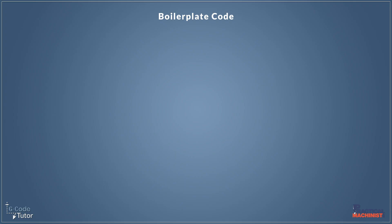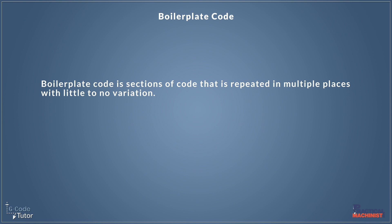This is a technique I came across when learning different programming languages such as Python and JavaScript. Quite often in these programming languages we repeat using the same code over and over. To save us writing it out every time, we use something called a boilerplate — a collection of these codes so we can just copy and paste. A boilerplate code is a selection of code that is repeated in multiple places with little to no variation.